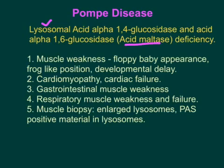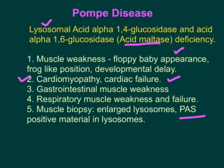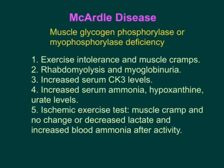Acid maltase deficiency leads to accumulation of glycogen in lysosomes of all tissues. Signs and symptoms include muscle weakness — a baby presents as a floppy baby in a frog-like position due to developmental delay and poor muscle tone. The most important sign is cardiomyopathy leading to cardiac failure, which is the most common cause of death. Gastrointestinal and respiratory muscle weakness can also occur. Muscle biopsy shows enlarged lysosomes filled with glycogen, which are PAS-positive.